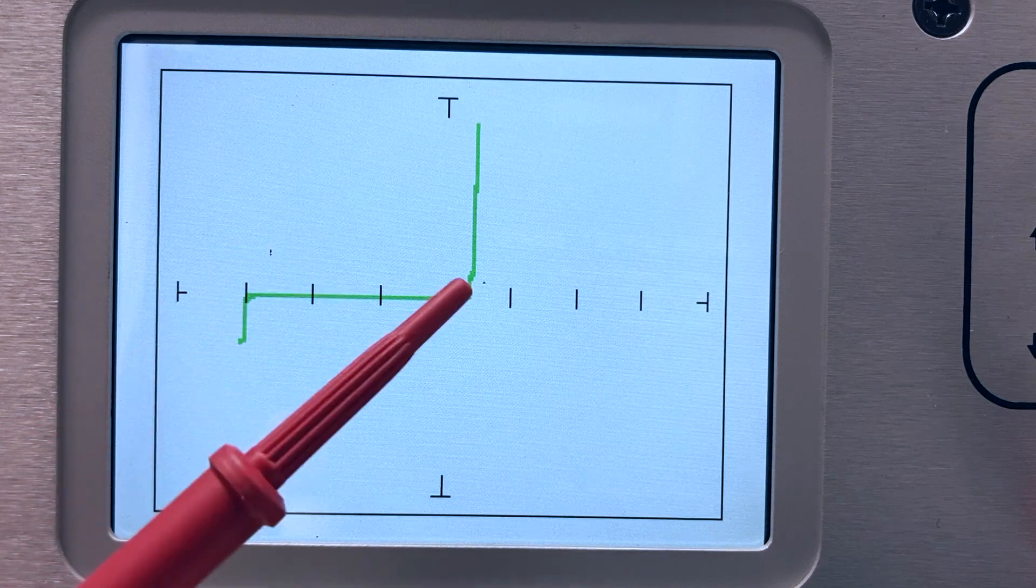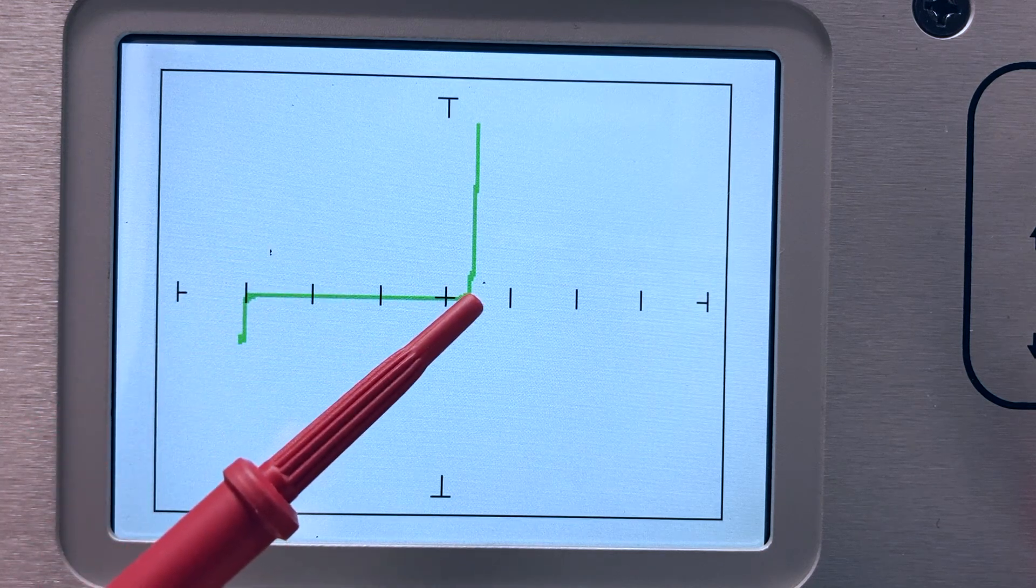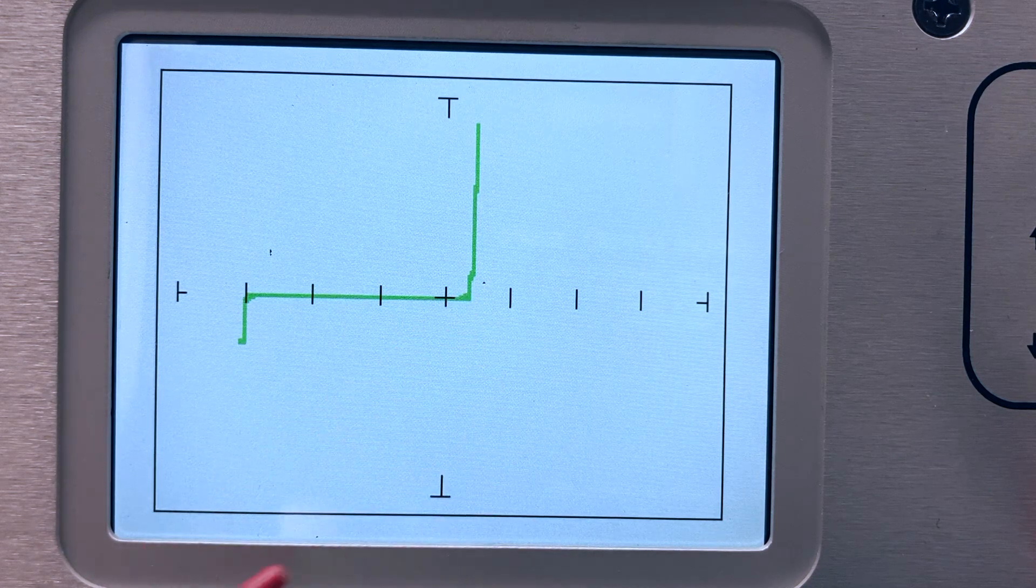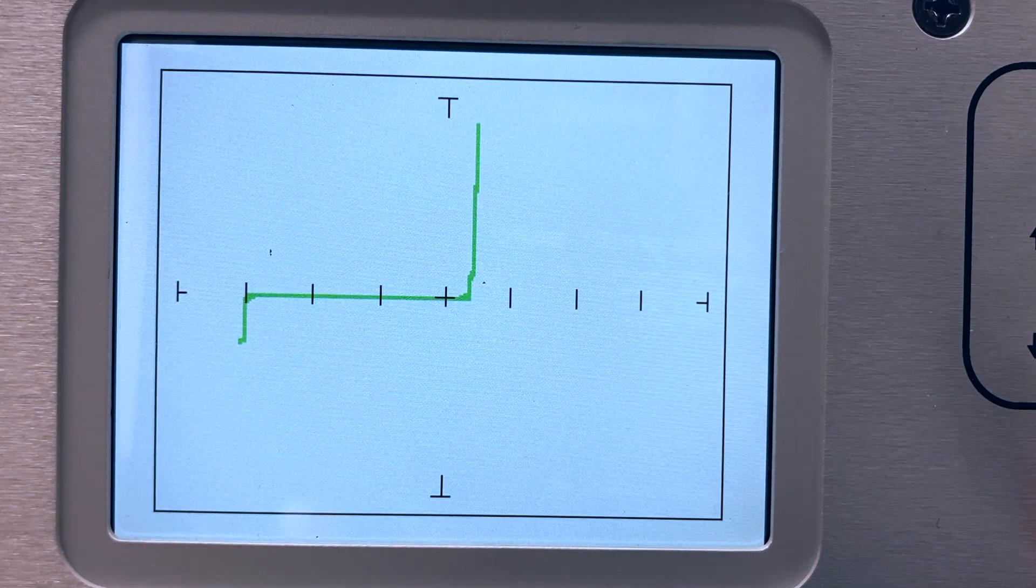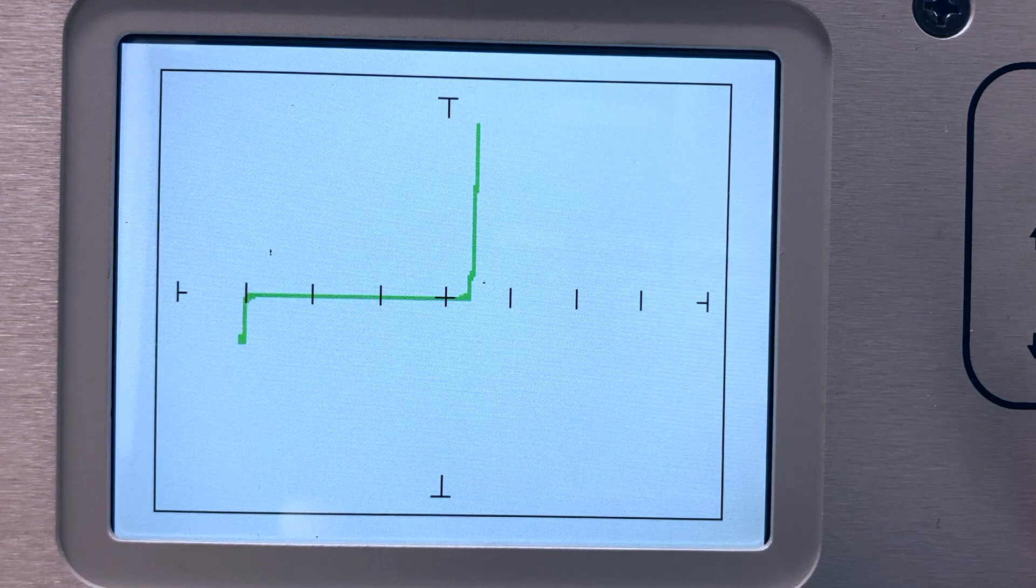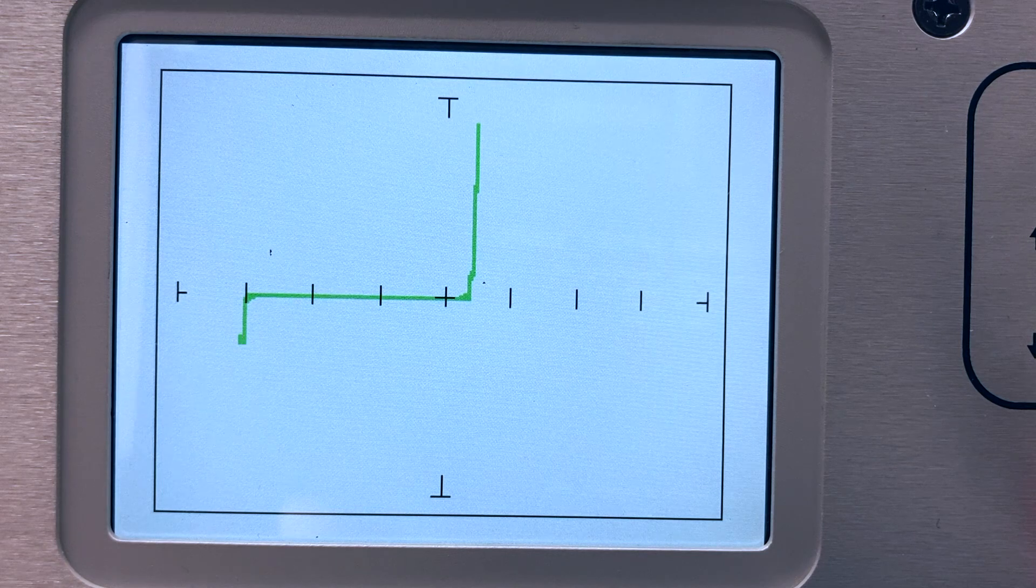The breakdown voltage depends on the construction of the Zener diode. Zener diodes will have a rated voltage at which they are supposed to break down. This is why they can be useful in an electronic circuit for setting a reference voltage or voltage surge protection.